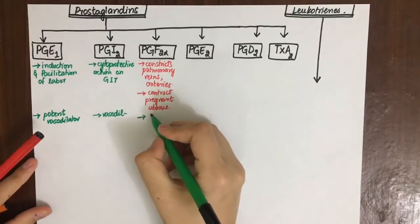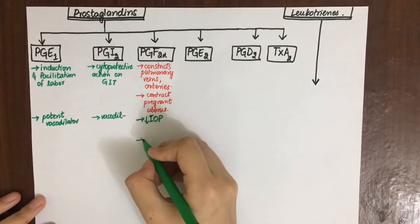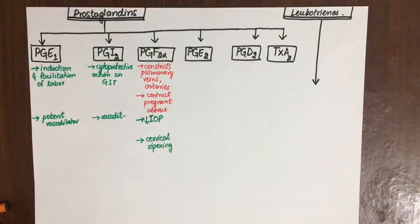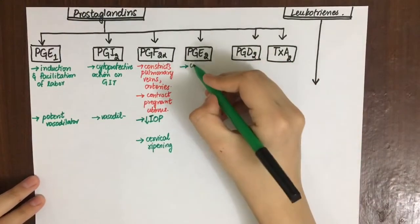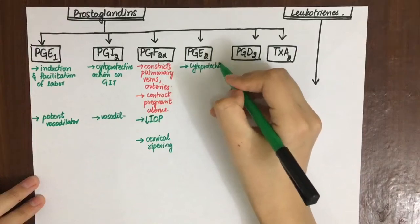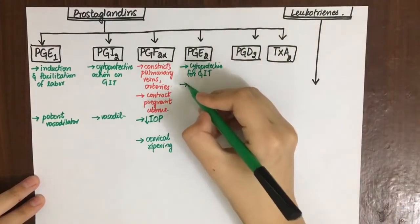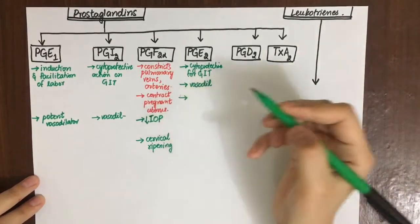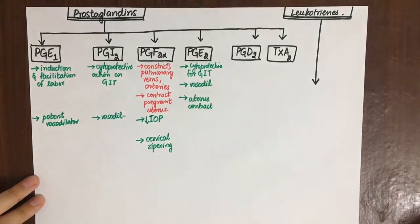It decreases intraocular pressure and plays a role in cervical ripening, making it favorable for induction and facilitation of labor. PGE2 is also cytoprotective for GIT. It vasodilates, contracts the uterus, and has a role in platelet and kidney function.